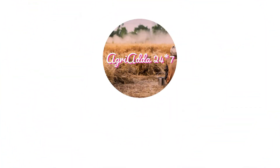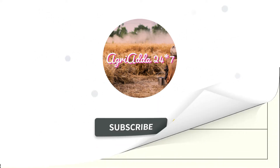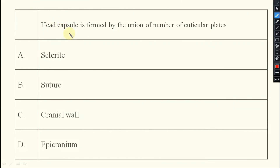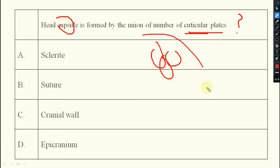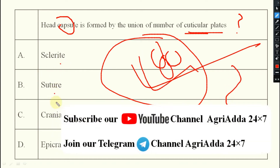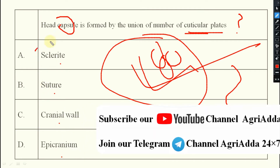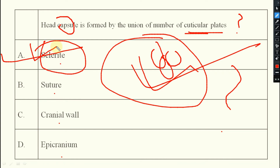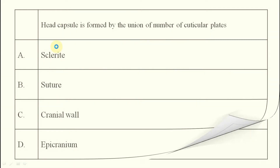Coming to the first question: the head capsule is formed by the union of a number of cuticular plates. These cuticular plates are known as what? The options are: sclerite, suture, cranial wall, and epicranium. The answer is definitely option A — sclerite.